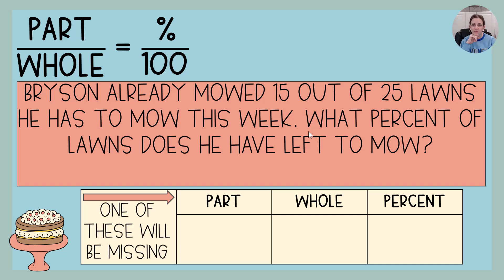Well, we know one of these pieces will be missing. What is the part? It's not 15, because in this problem, 15 is the number of lawns he has already mowed. He's done those, they're done, check, mark it off the to-do list.